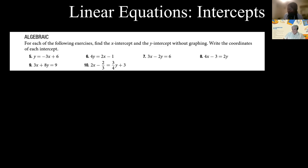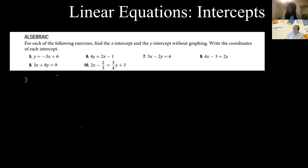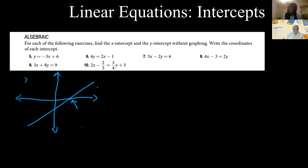The first question asks us to find the X and Y intercepts without graphing. We have a number of equations and we're supposed to find both intercepts. For X intercepts, if we look at a basic graph with a line, the X intercept is the point where the line meets the X axis. That's why it's called the X intercept — it intercepts the X axis. The Y intercept is the point where the line meets the Y axis.